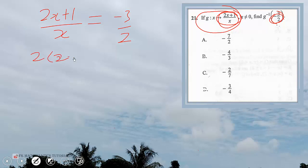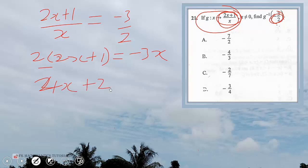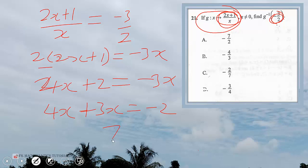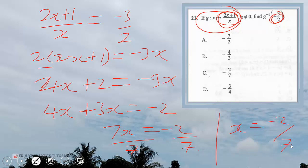When you cross multiply you get 2 times bracket 2x plus 1 equals negative 3x. Expanding: 4x plus 2 equals negative 3x. Grouping like terms: 4x plus 3x equals negative 2, so 7x equals negative 2. Dividing by 7, x equals negative 2 over 7.